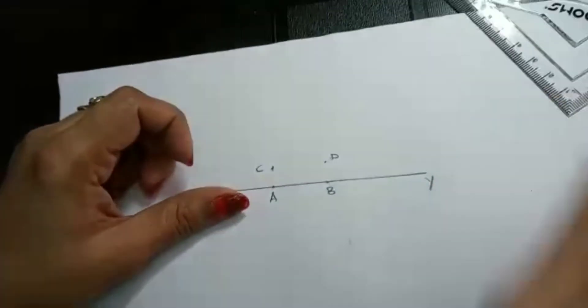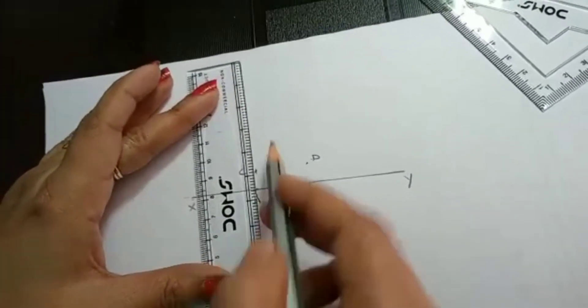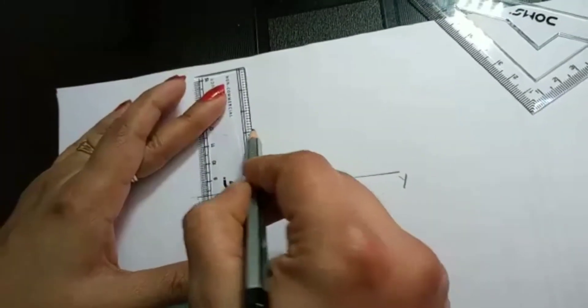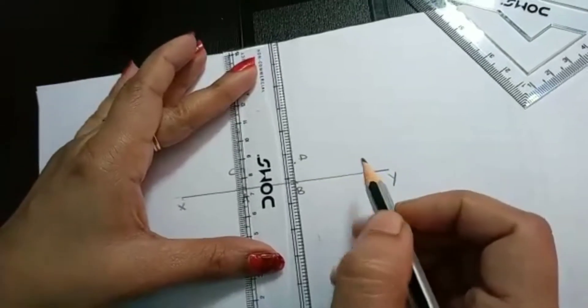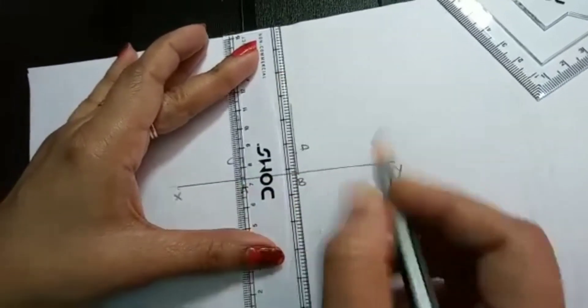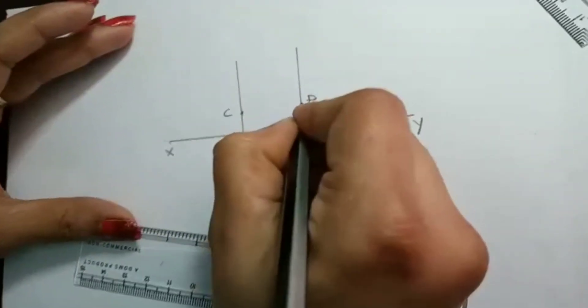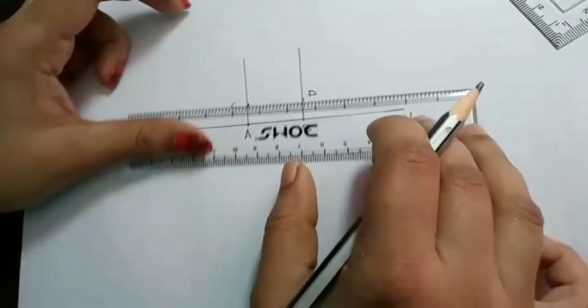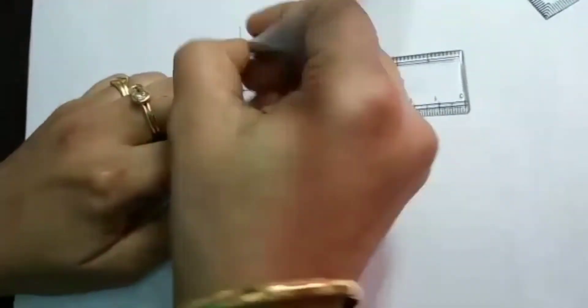So next thing is you have to connect all these things. So A and C you have to connect using a line segment. And B and D you have to connect using a line segment. So now here you got C and D points are already there. You can connect those two points also. That is the final step.